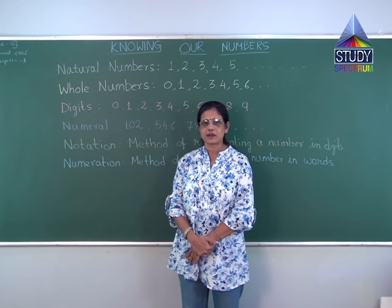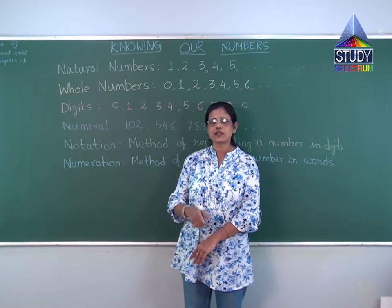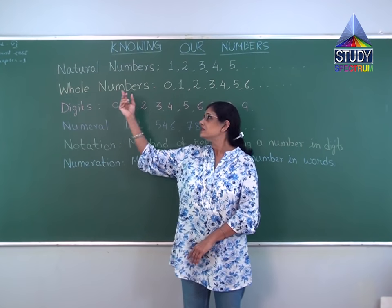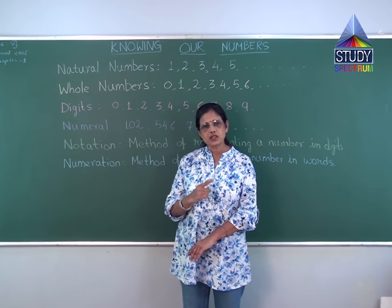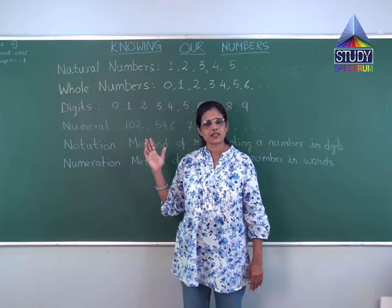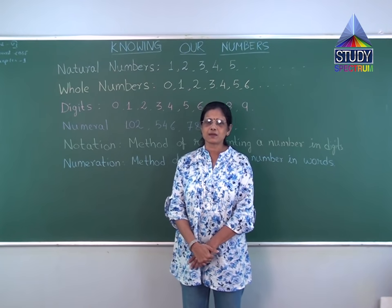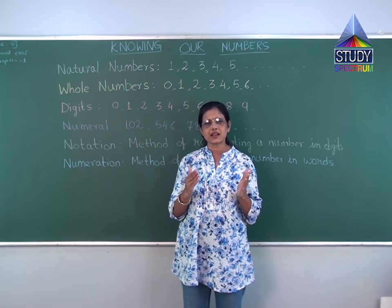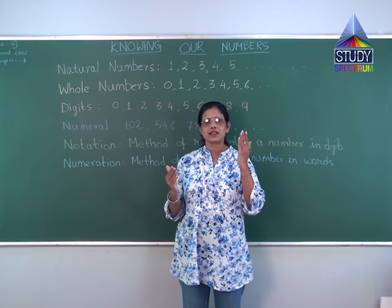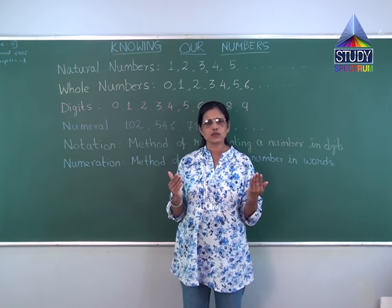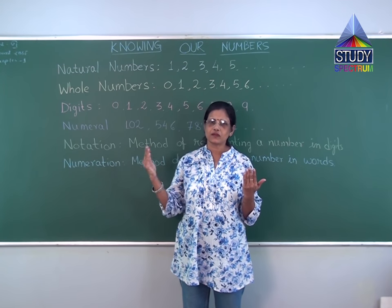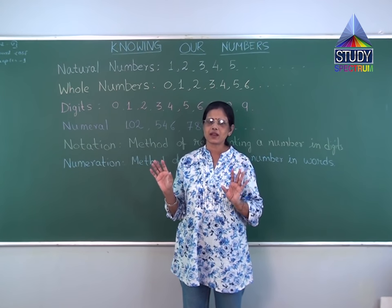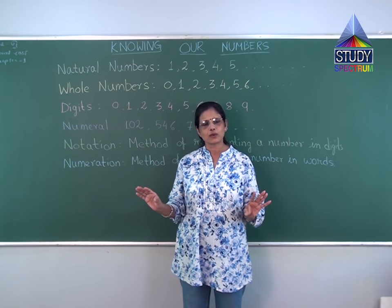Next point: whole numbers. Whole numbers always start with zero — that is why they are called whole numbers — and then follow as the natural numbers. So zero, one, two, three, four, five, six, and it goes on into lakhs, millions, billions. The difference between natural numbers and whole numbers is: natural numbers start from one to infinite, whole numbers start from zero to infinite. Only zero is the difference; otherwise both are the same.